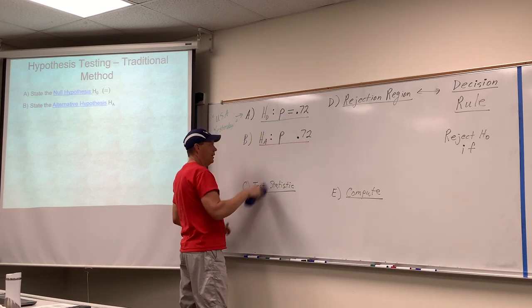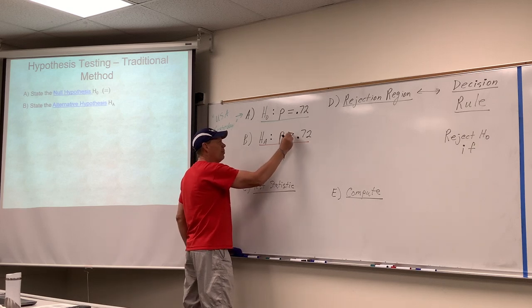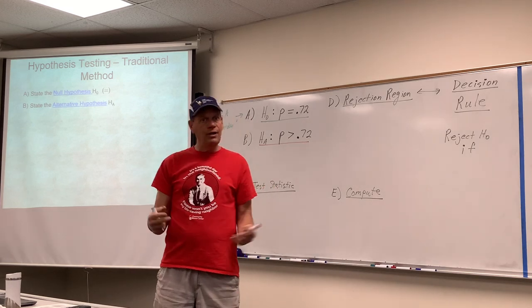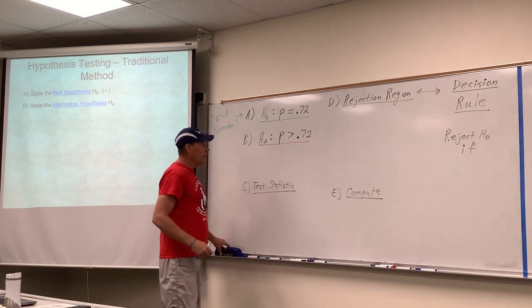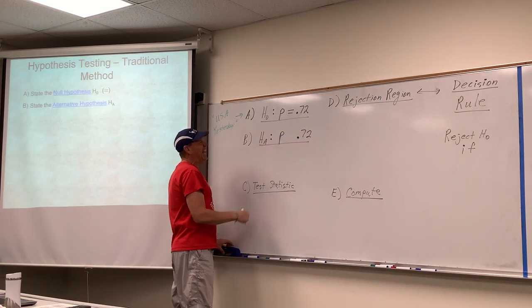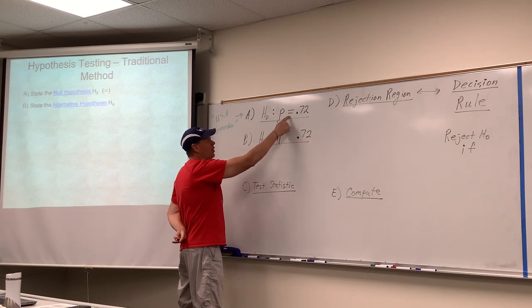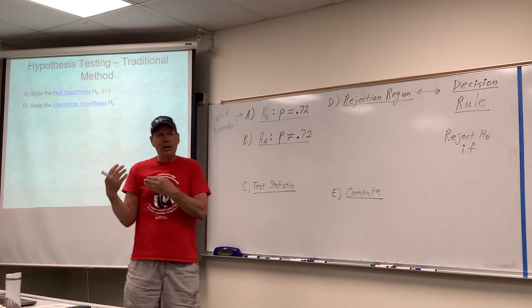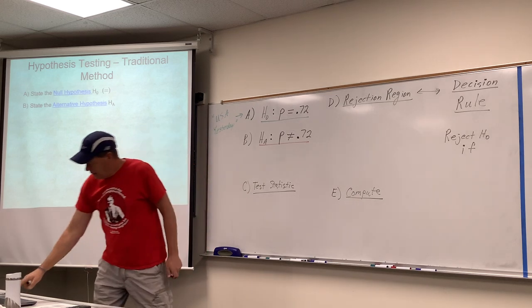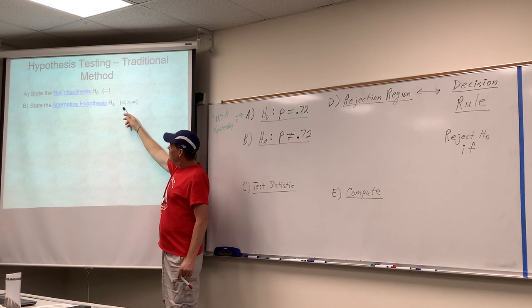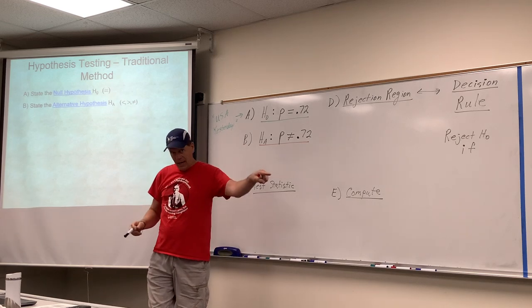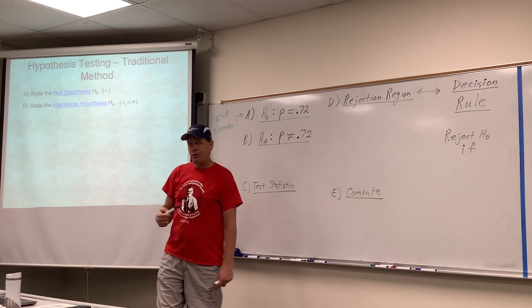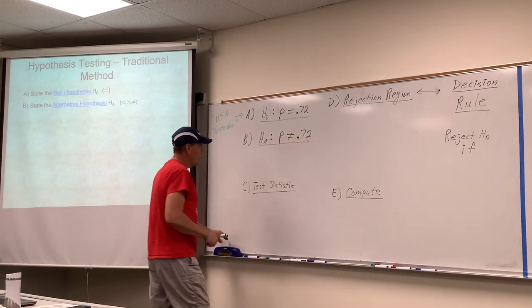Someone else might read that article and say, I think more people than that wear seatbelts — I think it's higher than 72%. That's another possible alternative hypothesis. A third person might say, I don't know if it's higher or lower, I just don't think it's equal to 72%. Those are the three mathematical relationships that are alternatives to equal.